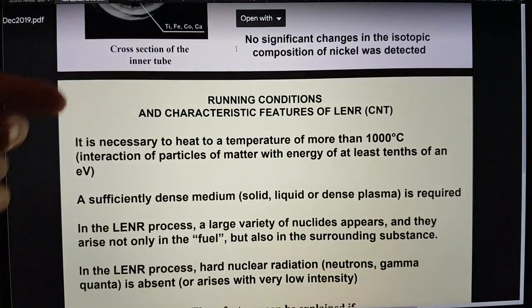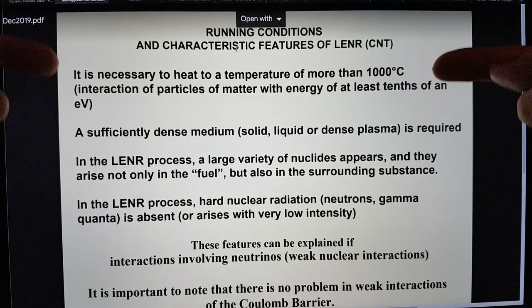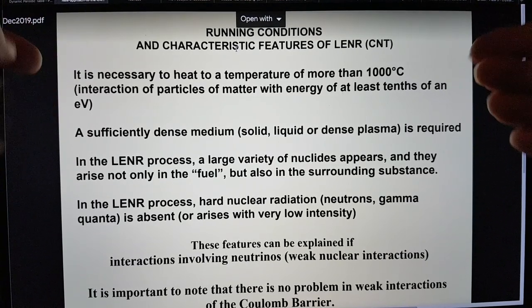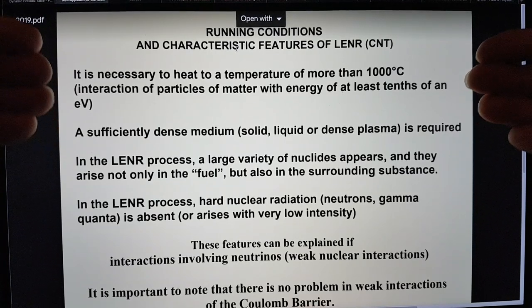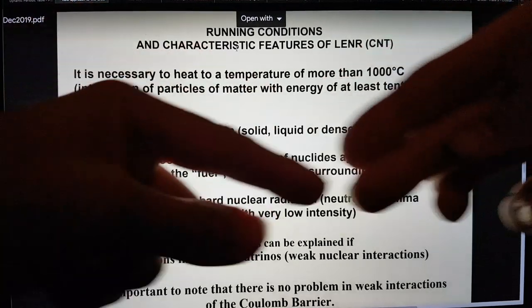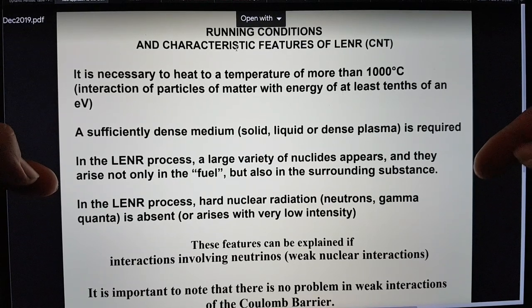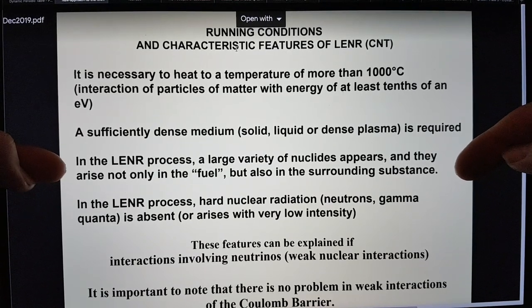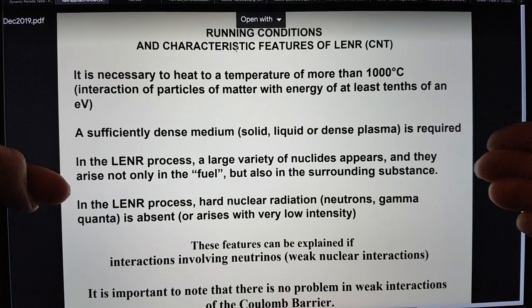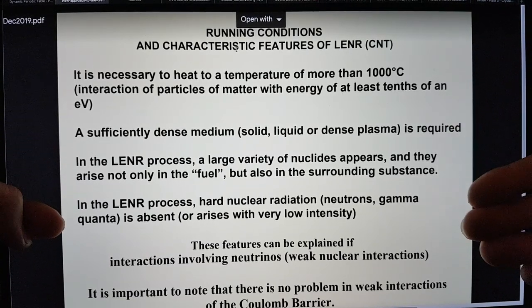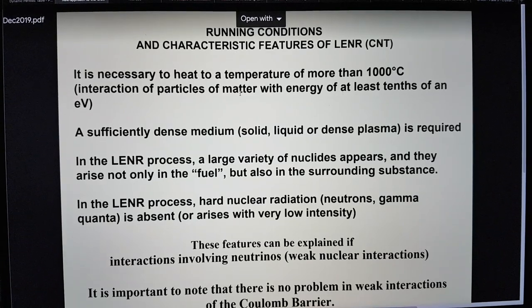So what he's saying is essentially, in these new type of thinking, is that you need to heat to a temperature of more than 1,000 degrees C. And at that point, about 10%, or I think at 2,000 degrees C, I think about 10% of the solid or liquid or dense plasma matter is able to have particle interaction energies sufficient to synthesize neutrinos and antineutrinos. And so he says that a very large variety of nuclides appears in the process, and they're not in the fuel, and they're not in the actual reactor materials. So where did they come from? And then he's talking about the fact that there's little to no hard radiations, and this can be explained by weak nuclear interactions, and so on.